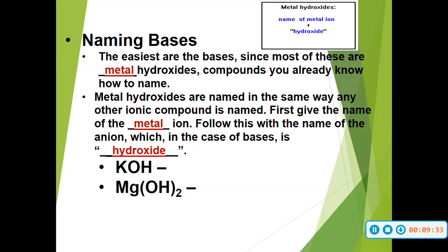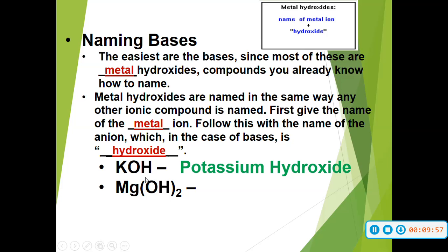Naming bases is actually so much easier than naming acids, because all you simply do is name the metal in the front, and then OH is hydroxide. So K is potassium, and OH is hydroxide, so the name of this base would be potassium hydroxide. For our second example, magnesium and hydroxide — the name of this base would be magnesium hydroxide.